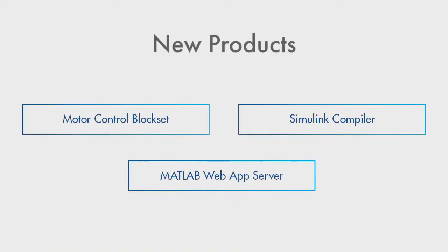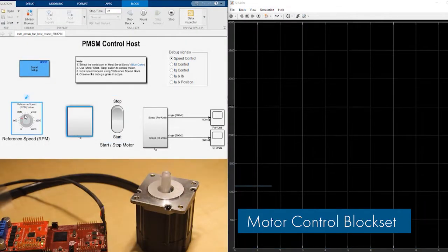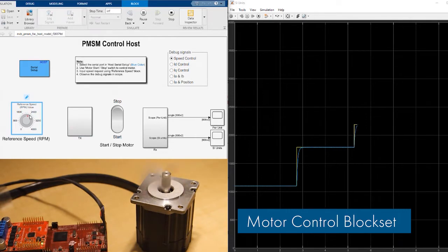20a also includes three new products. Motor Control Blockset contains a library of motor control algorithms optimized for generating compact code, as well as out-of-the-box support for several motor control hardware kits.